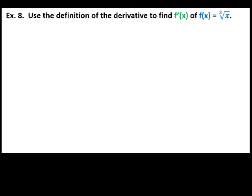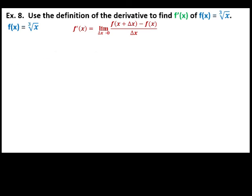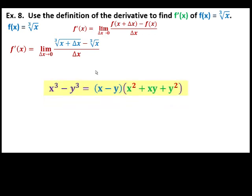Next: use the definition of the derivative to find f prime of x of f of x equals cube root of x. Starting with the definition of the derivative, we replace x with x plus delta x minus the original function, which is cube root of x. We are familiar with the difference of 2 cubes and its factors. Factoring this difference of 2 cubes: x minus y times square of the first term. If this is minus, this is plus the product of the terms plus square of the second term. We apply it here.